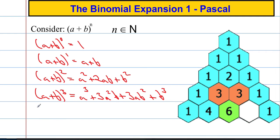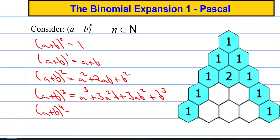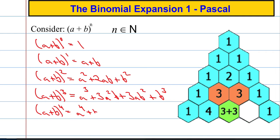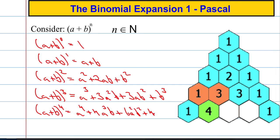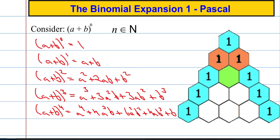And if we were to go even one step further and say do a plus b to the power of four and expand it all out and tidy it up, we'd end up with a to the power of four plus 4a cubed b plus 6a squared b squared plus 4ab cubed plus b to the power of four.